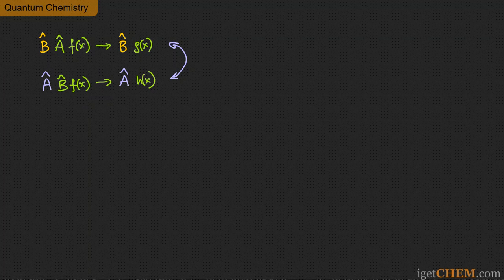But sometimes there are pairs of operators A and B in quantum mechanics where applying A first then B versus B first then A doesn't actually make a difference. In that case, those operators are said to commute with each other.